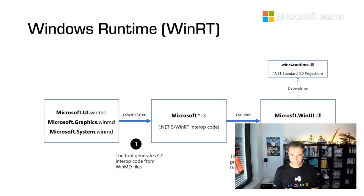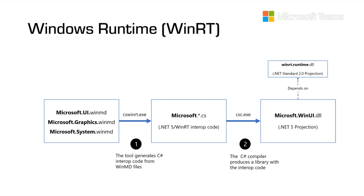Regarding the Windows Runtime: the WinUI 3 NuGet managed package has a dependency on the C# WinRT NuGet package, which brings the WinRT Runtime DLL and the CsWinRT tooling. This tool consumes the metadata file that defines the WinRT libraries, and generates interop .NET 5 code — which is standard .NET Standard 2.0. This interop code is then used by the WinRT runtime library, giving you access from managed .NET code to the native controls.